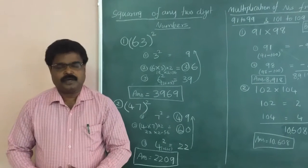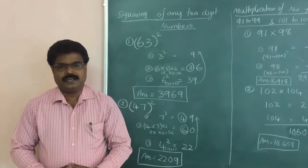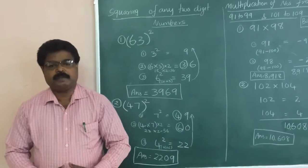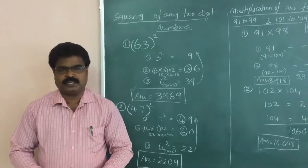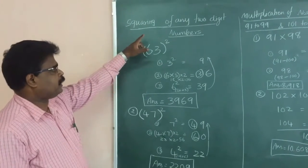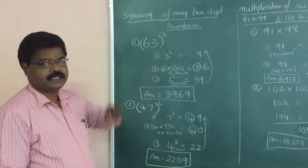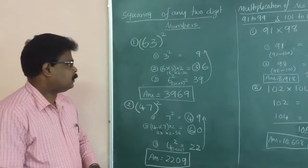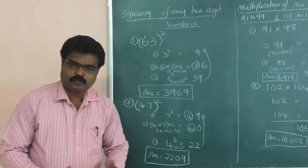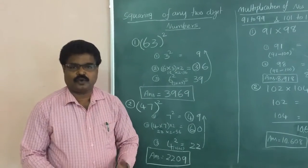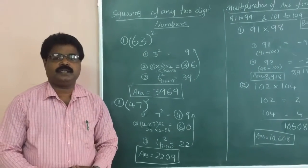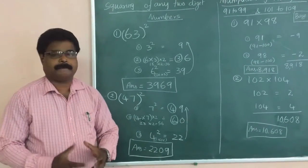Here we are going to see another four sets of quick mathematical calculations. The first one is squaring any two-digit number — it may be 63 squared, 43 squared, 22 squared, any two-digit number.